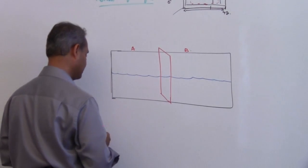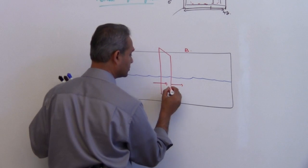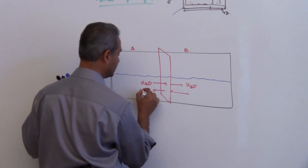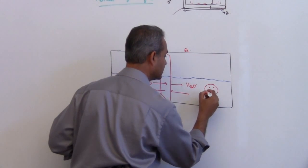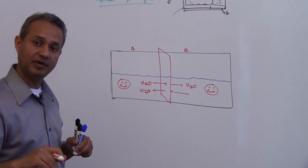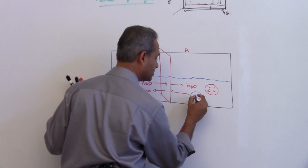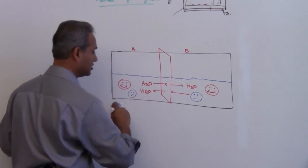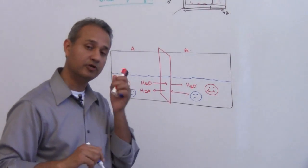Two compartments, semi-permeable membrane. This membrane allows free movement of water - water can go from here to there or back. The water molecules are happy, they can move to both sides. But it's a semi-permeable membrane - it won't allow solutes. The solutes are sad because they cannot cross this membrane.